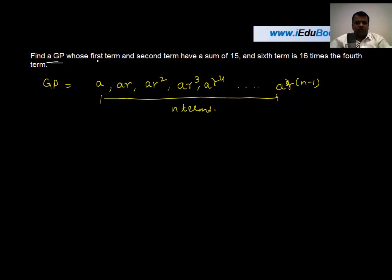Now you are told that the sum of the first term and the second term of the geometric progression—the first term is a, and the second term is ar. You are told that the sum of these two terms, a + ar, is equal to 15. So let's call this equation 1.